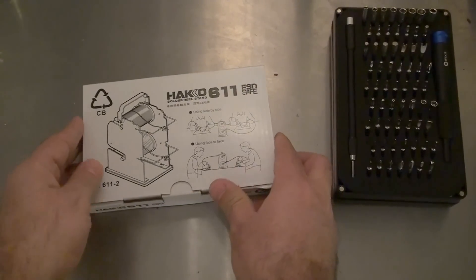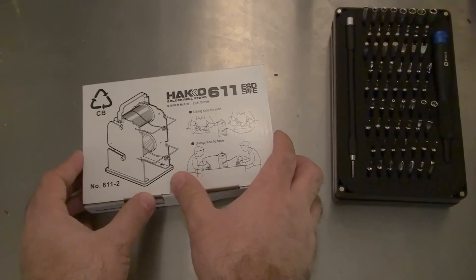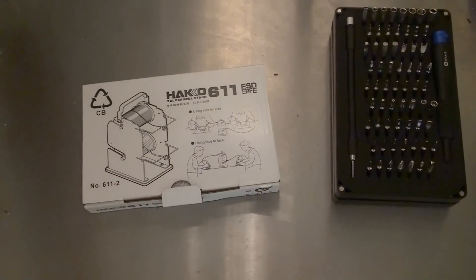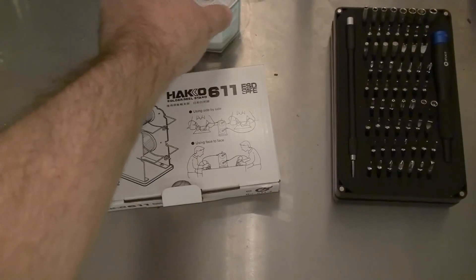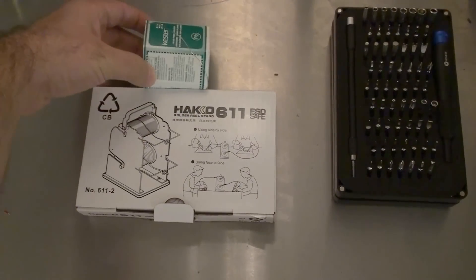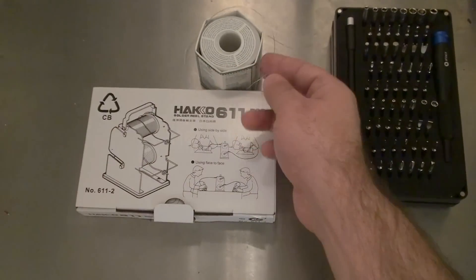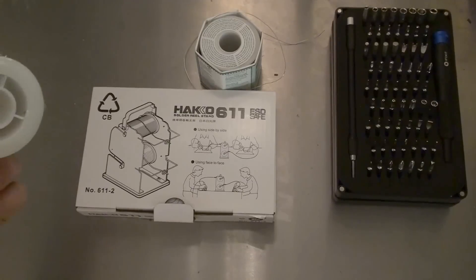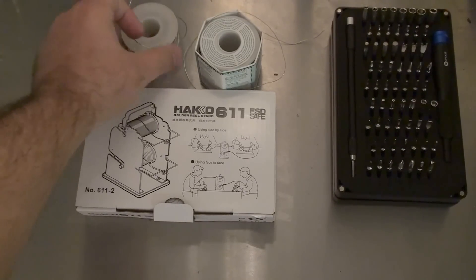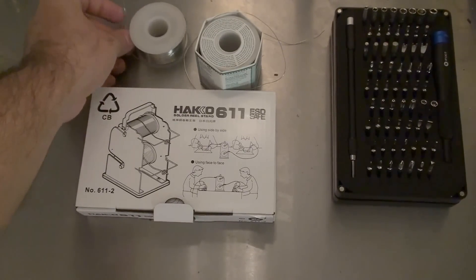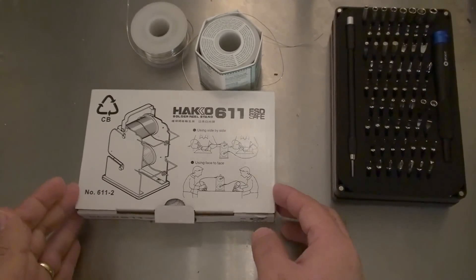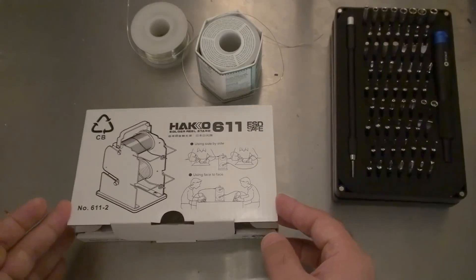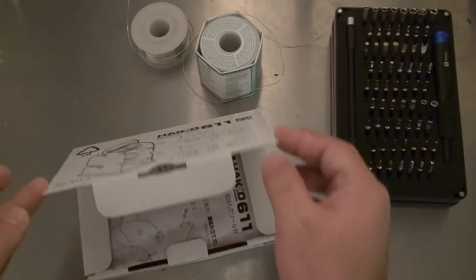On to the second half, which is the Hakko 611 solder dispenser kit. So as I'm sure you guys have seen in a lot of my videos, I've been using this Kester solder here, and I've just been pulling it out and pulling it across the desk, and I also have this stuff, which is another Kester, but this is a half roll. So while I was on the iFixit website, I thought I would get myself this Hakko 611 solder stand.